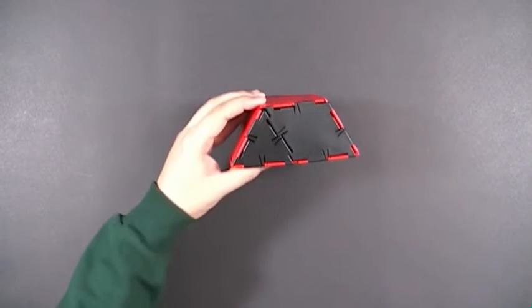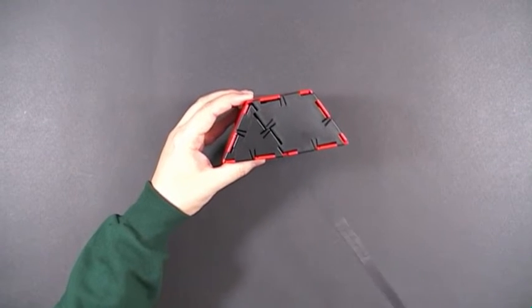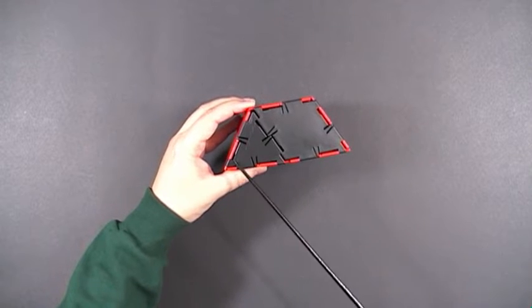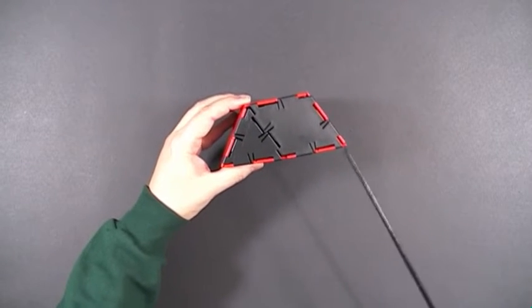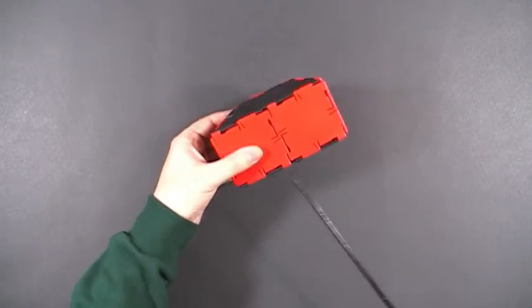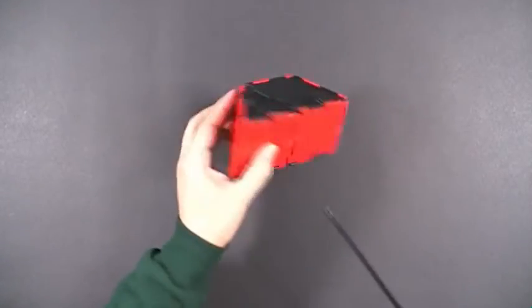I won't be showing you any nets for these prisms since half the fun is putting them together. Here I have an isosceles trapezoid that was created by using an equilateral triangle and a rhombus. The sides of the prism are all squares.